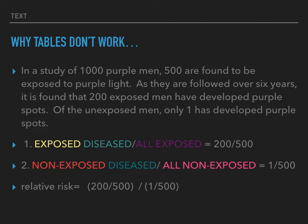Our second expression is the non-exposed diseased subjects divided by all non-exposed subjects. The non-exposed diseased is only one, from the line that says of the unexposed men, only one has developed purple spots. The total non-exposed is 500 purple men who were not exposed, obtained by subtracting 500 who were exposed from 1,000 total. So our relative risk is 200/500 divided by 1/500.